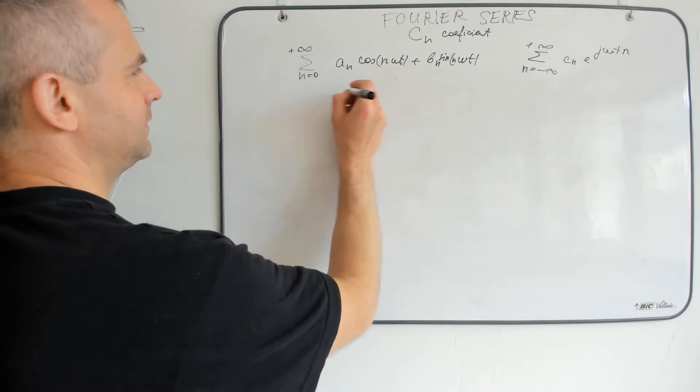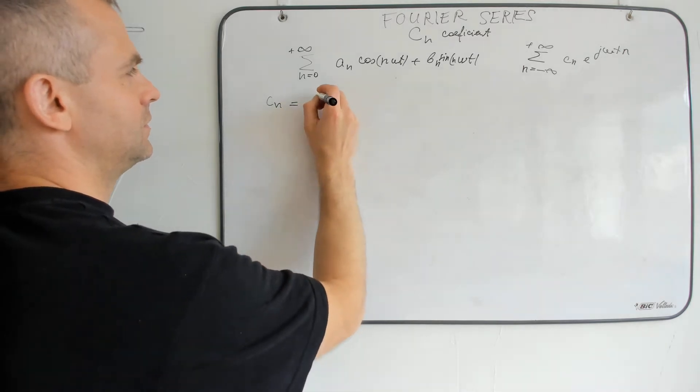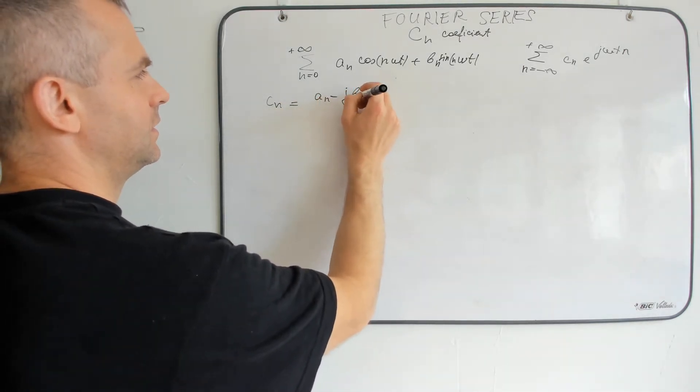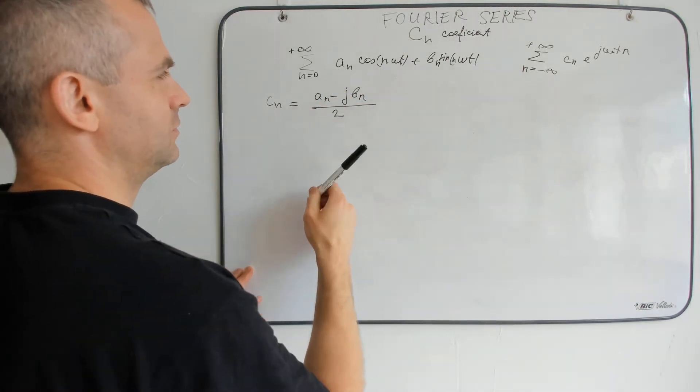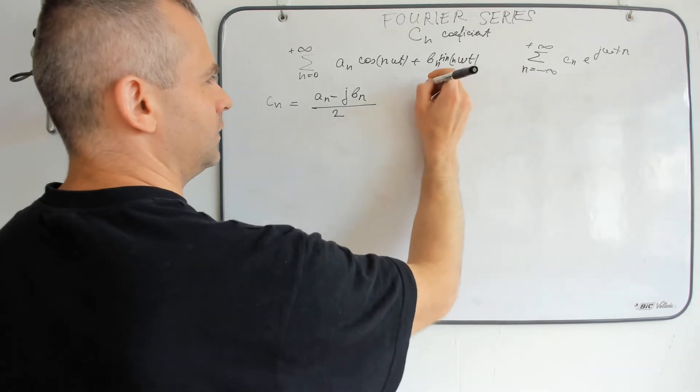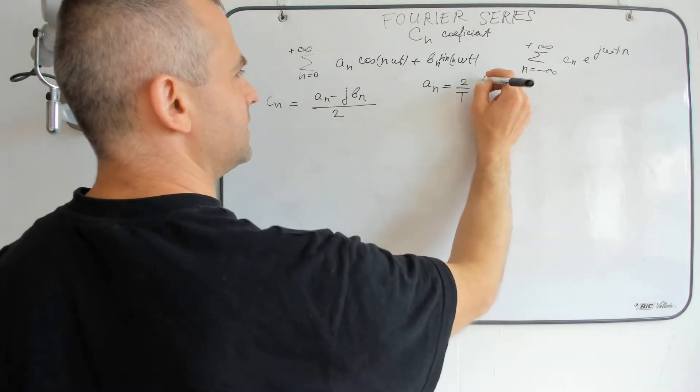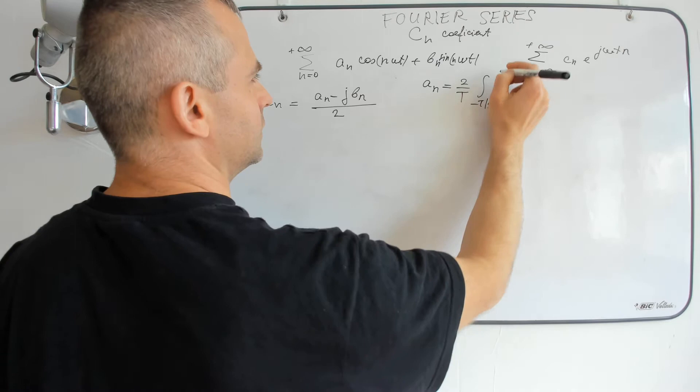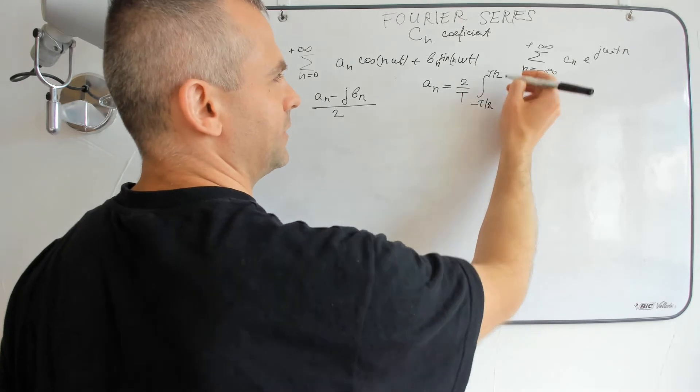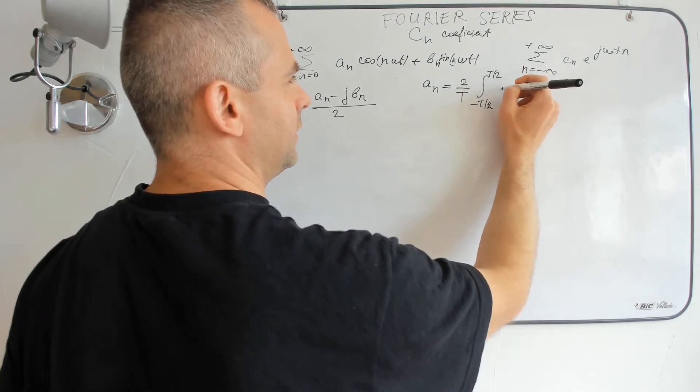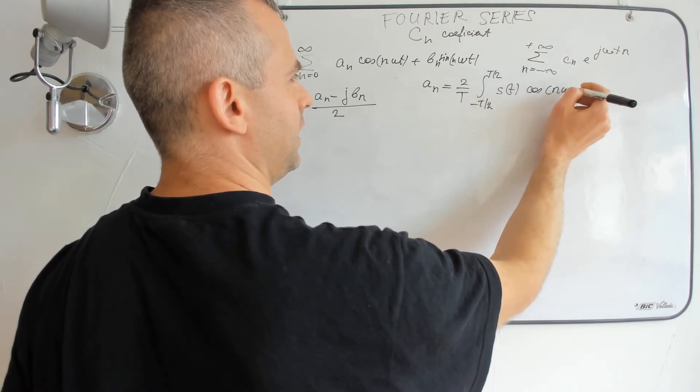We remember that Cn equals An minus jBn divided by 2. Let's remember An's relation. An is the integral from minus half of a period to half of a period of s(t) cos(n omega t) dt.